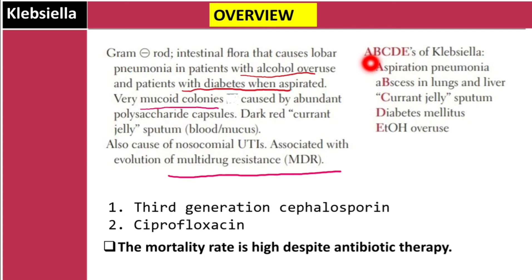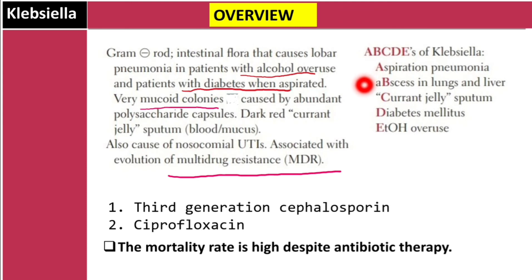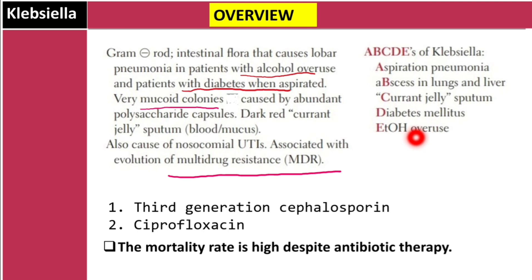There is a mnemonic to remember the key characteristics of Klebsiella — the ABCDEs of Klebsiella: A = Aspiration pneumonia, B = abscesses in lungs and liver, C = Currant jelly sputum, D = Diabetes mellitus, E = Ethanol (alcohol overuse). That's everything you need to know about Klebsiella pneumoniae.